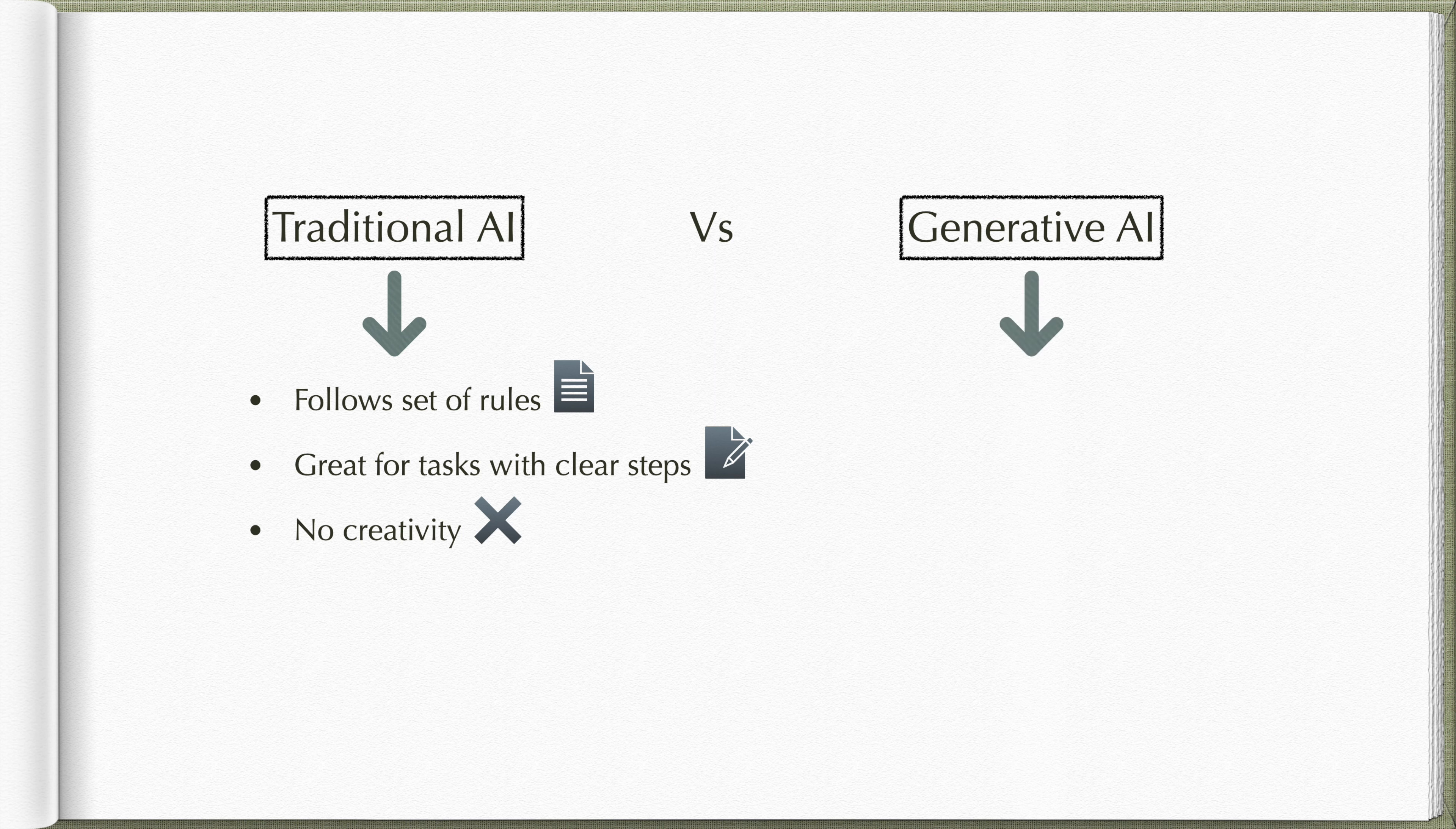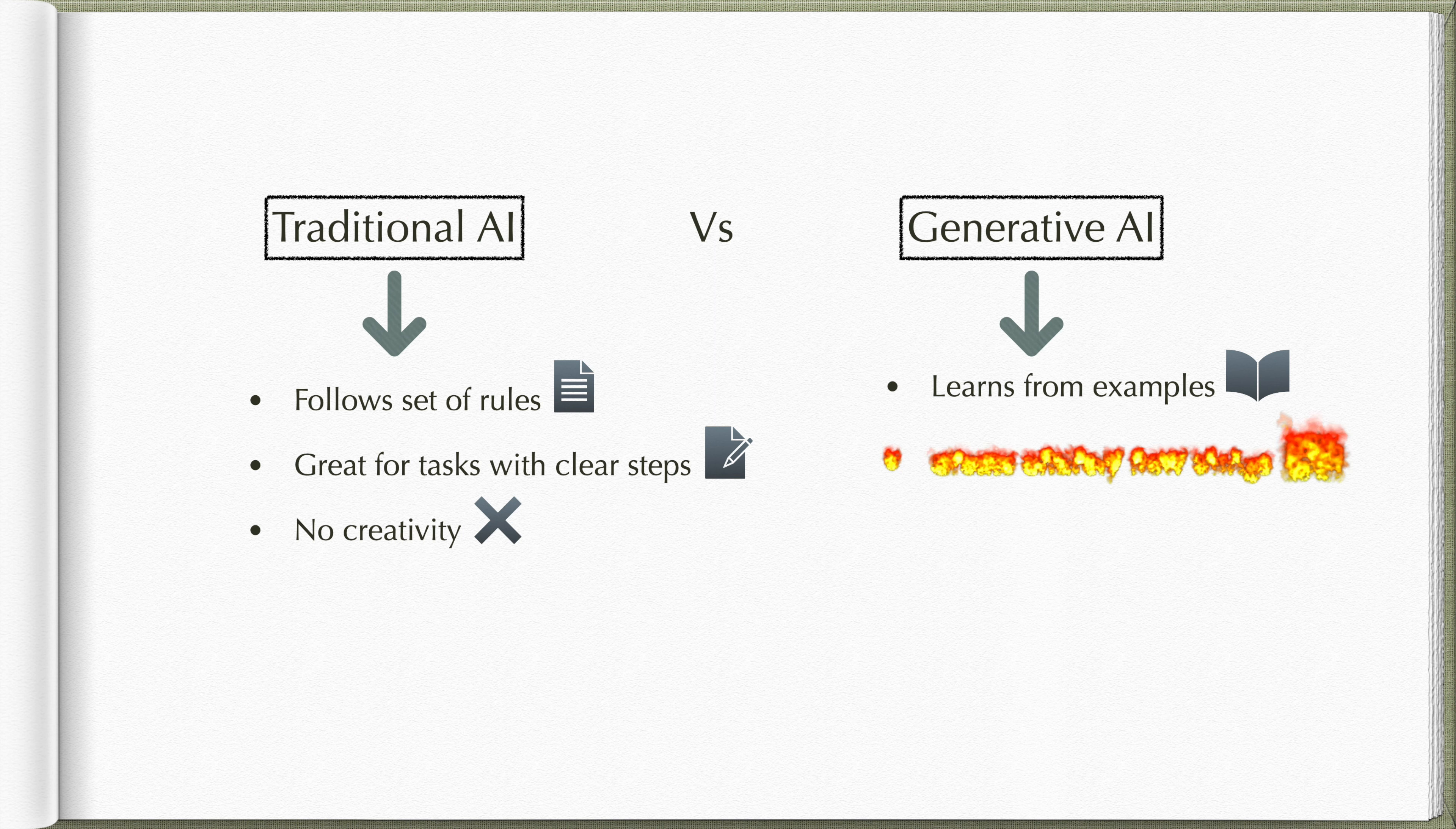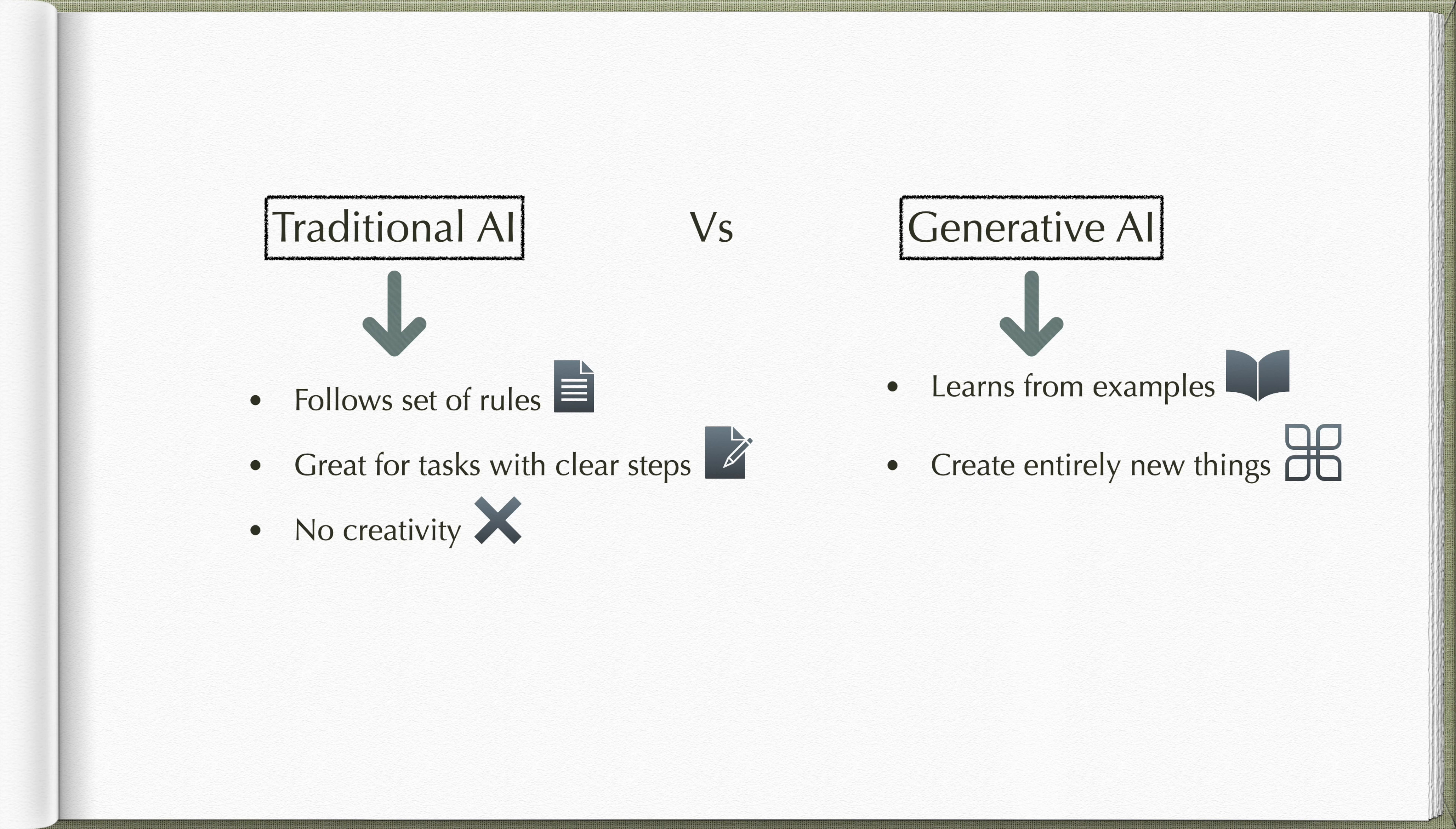Generative AI, on the other hand, is more like a painter. It learns from examples and can create things that are entirely new and unexpected. It's not just about following instructions, but it's about imagining and innovating.